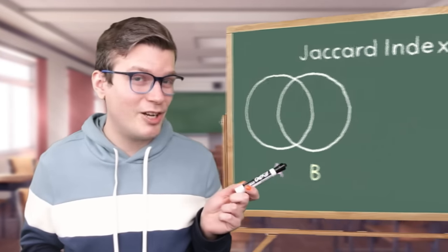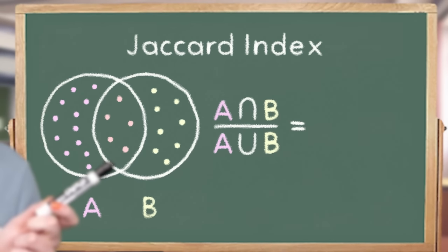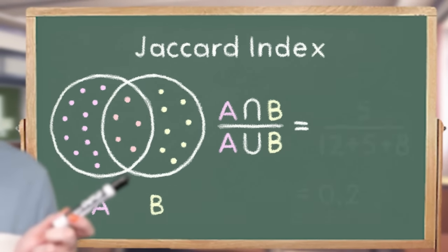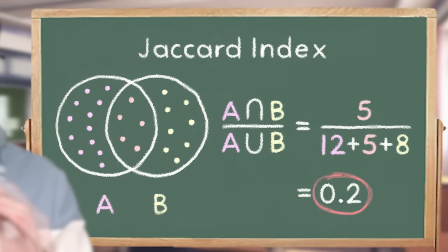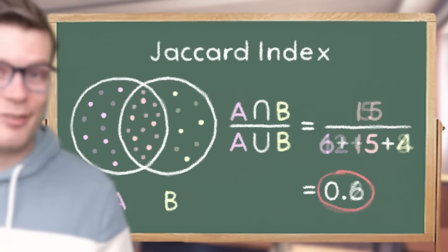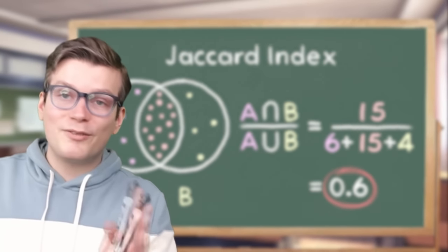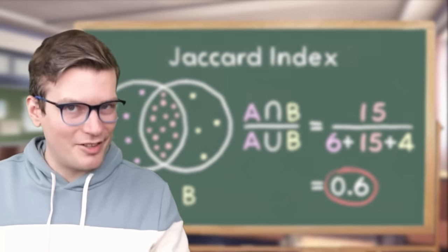Now if you'll allow me to be a nerd for just a second, I'd like to explain what exactly I mean by most similar subdivision. There are many measures of similarity out there, but the one that's most relevant to this situation is the Jaccard Index. This is basically a measure of how much the intersection of two sets makes up the union of the two sets. In simpler terms, the higher the Jaccard Index, the more visitors two places have in common relative to their combined visitor list.